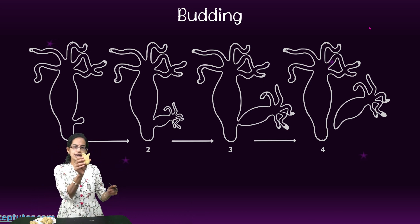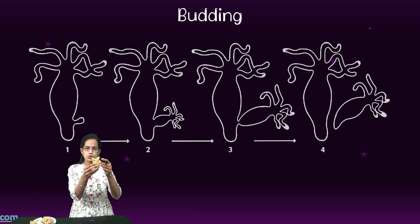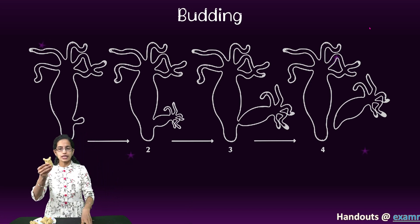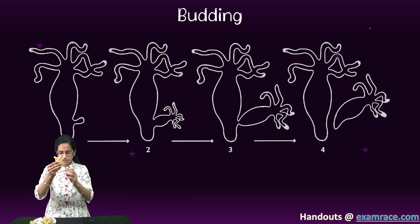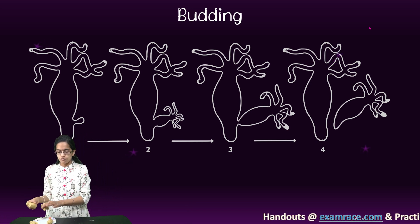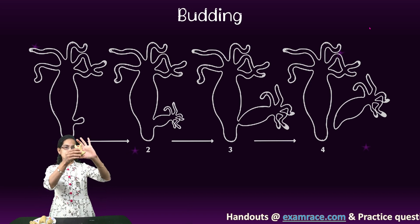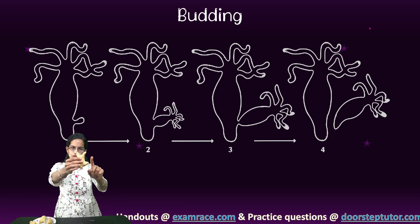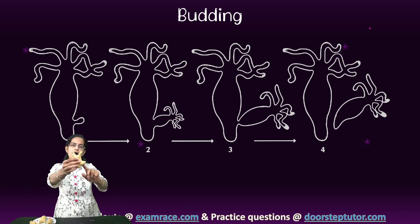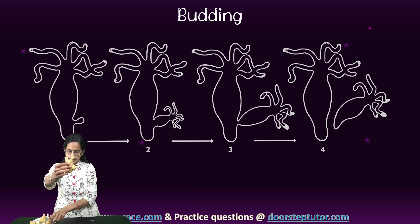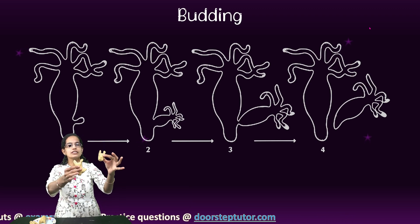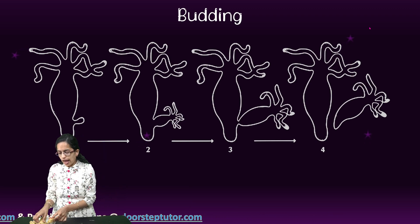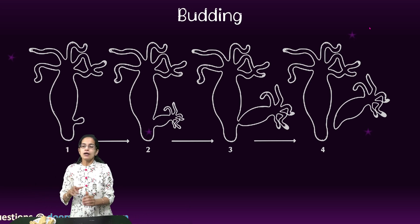Let's say we have a hydra here. This hydra slowly and gradually, at a specific location, would start to develop a bud. That bud would slowly and gradually develop to form a new small young hydra — and that is the process of budding.